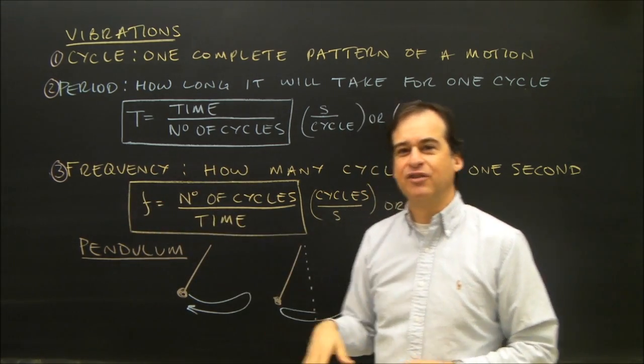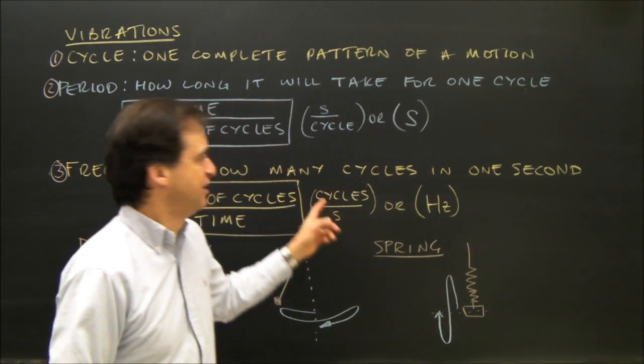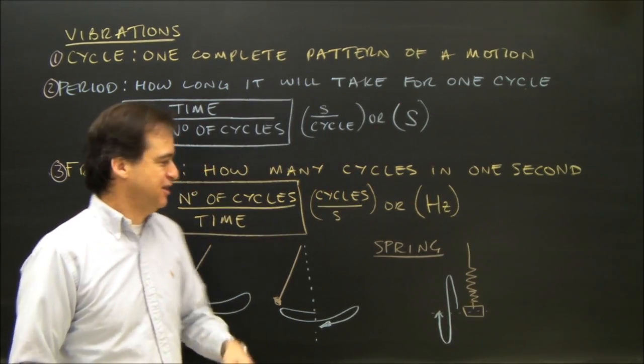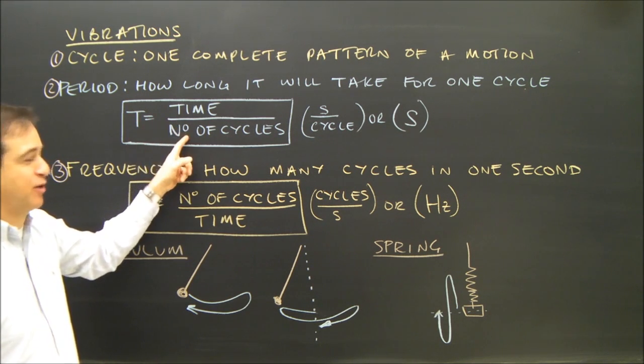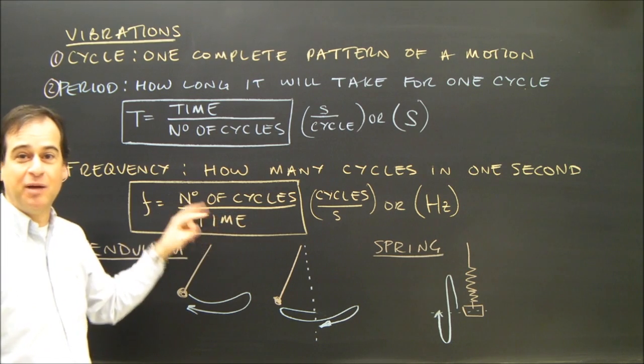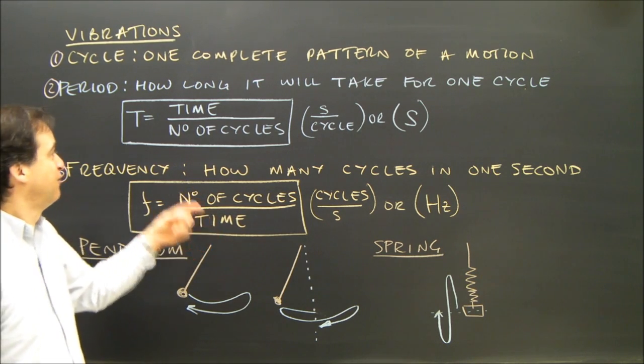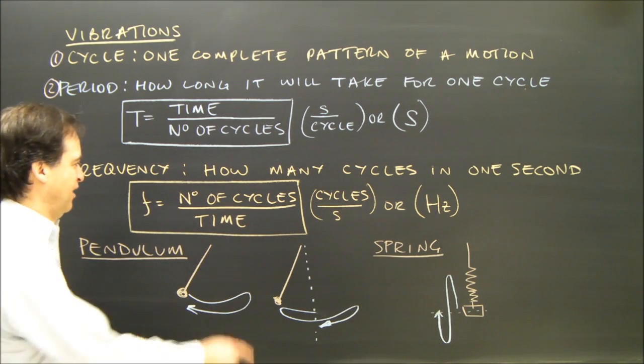Now, frequency is kind of the opposite of that. Frequency is how many cycles in one second. If I have here the formula period is time over number of cycles, frequency is the number of cycles per time. It's actually just the inverse. In fact, one over period equals frequency. It's a different way of looking at the same thing.